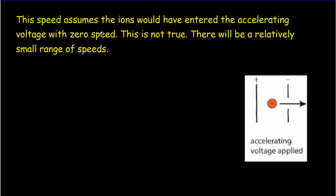So the speed that we just calculated assumes the ions entered with zero speed. Not necessarily the truth. There will be a small range of speeds coming out this side of the plate.